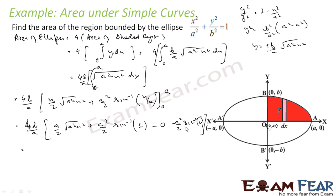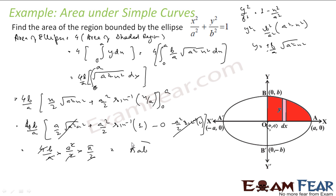At x = a, √(a² − a²) = 0 and sin⁻¹(1) = π/2. At x = 0, sin⁻¹(0) = 0. So we get 4b/a × (a²/2 × π/2). The 2 and 4 partially cancel, and a cancels with a², giving π × a × b — and that is our answer. We know that the area of an ellipse is πab for the equation x²/a² + y²/b² = 1.